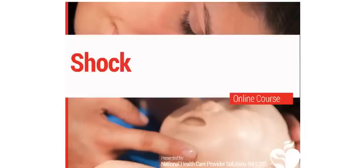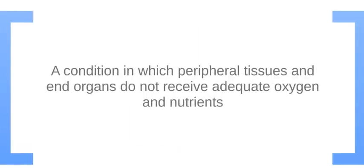Here we will be discussing pediatric shock. Shock is a condition in which peripheral tissue and organs do not receive adequate oxygen and nutrients. There are four kinds of shock: hypovolemic, cardiogenic, obstructive, and distributive.